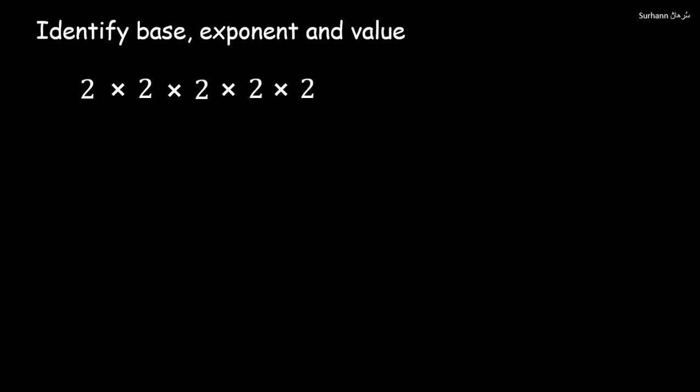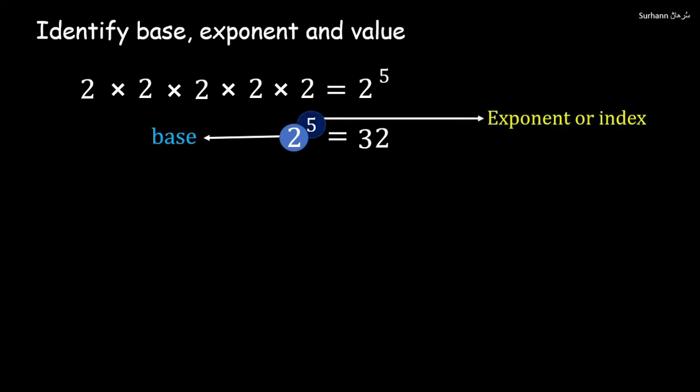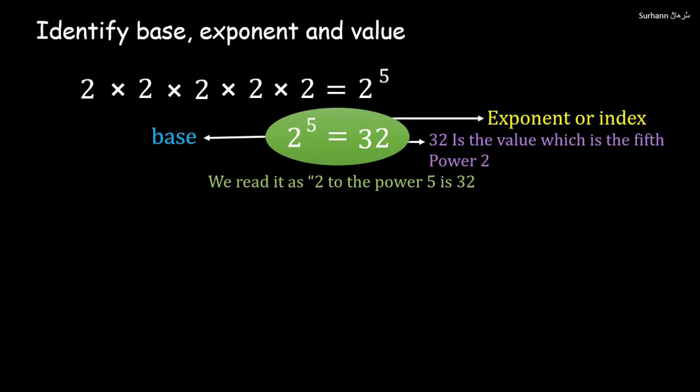Now let us start. Now how to identify the base, exponent, and value? Suppose if we multiply 2 by itself five times, then we write it like this: 2 to the power 5. When we multiply 2 by itself five times, then we will get 32, where 2 is a base, 5 is an exponent or index, and 32 is the value which is the fifth power of 2.